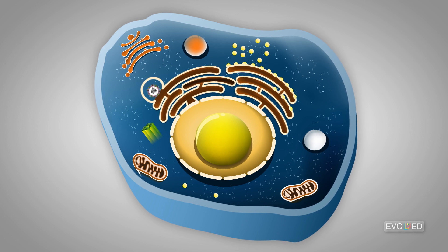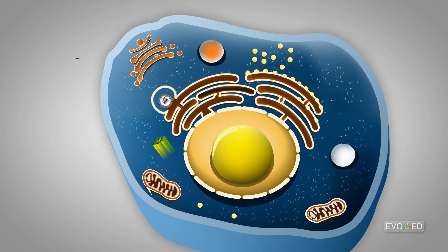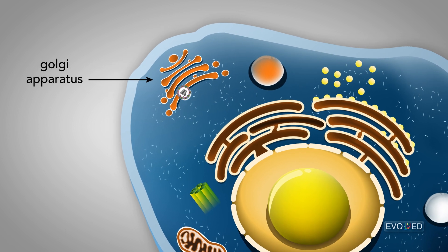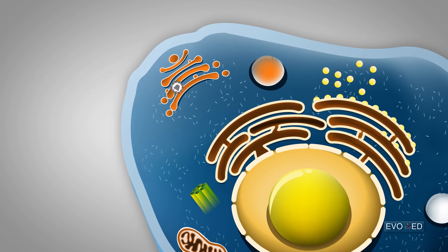That membrane-bound vesicle then travels to another cellular organelle called a Golgi apparatus. The vesicle fuses with the Golgi and then within the Golgi, the virus components are modified and then packaged into a new vesicle that comes off of the other side. This new vesicle then travels to the cell membrane and fuses with it,